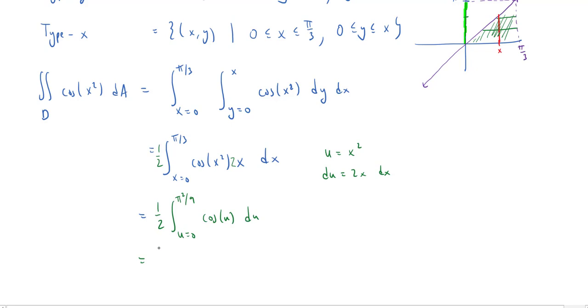All right, so this is pretty easy now. We have 1 half, any derivative of cosine is sine, and we'll evaluate between 0 and pi squared over 9. At 0, I'm just going to get sine of 0, which is 0. So all I'm left with is 1 half sine of pi squared over 9. And there's my double integral.